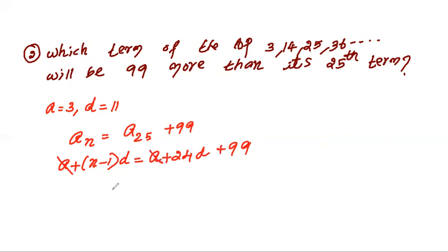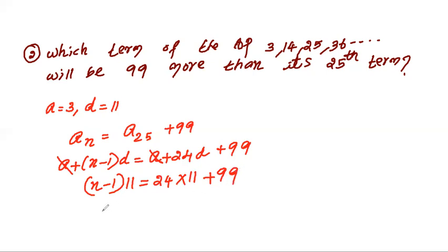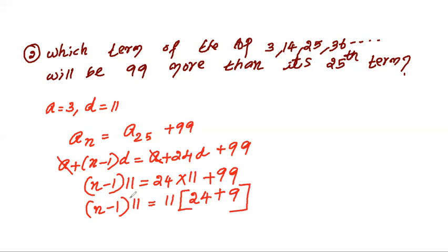We can cancel A from both sides. Then n minus 1 into D equals 24 into 11 plus 99. Taking 11 outside from both terms: n minus 1 into 11 equals 11 into 24 plus 9. Cancel 11 from both sides, giving n minus 1 equals 33, which implies n equals 34.